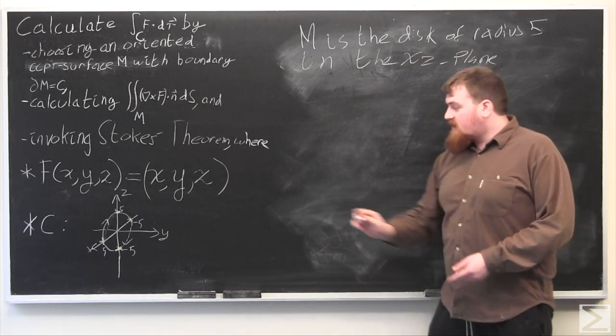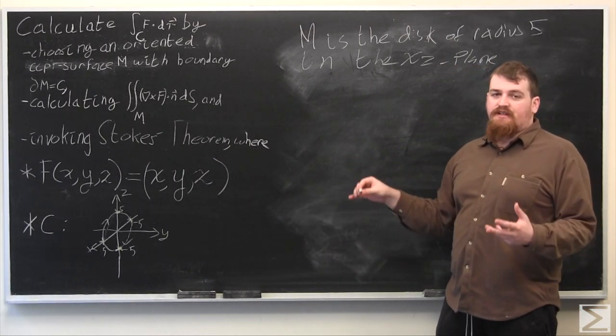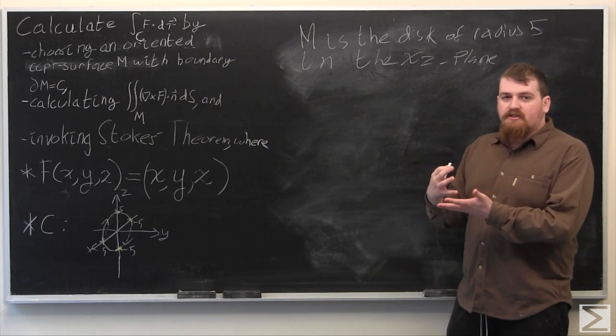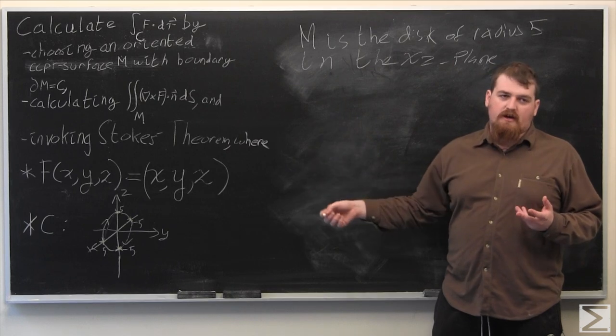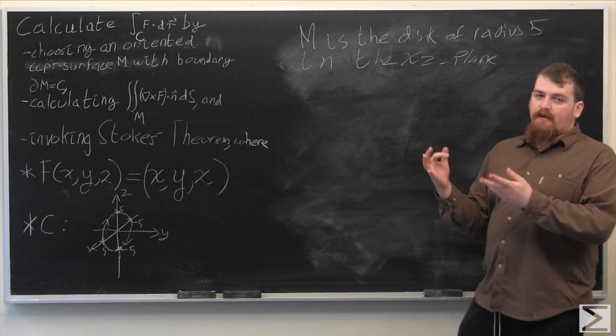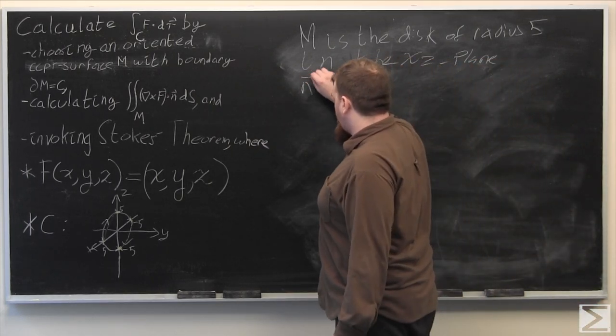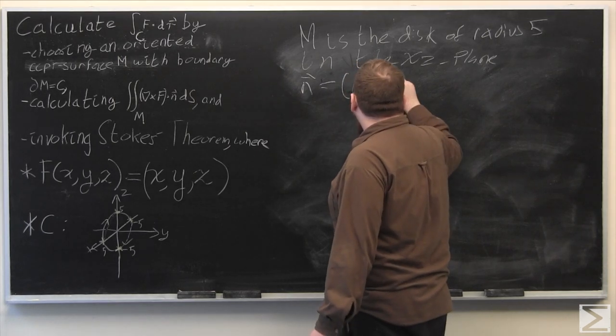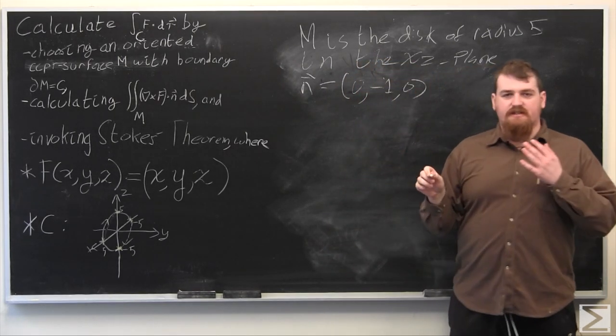And of course, since c in the x, z plane is oriented clockwise when you look at it from the positive y direction, proper orientation direction is anticlockwise, so the normal vector that coincides with the orientation of c for m is going to be the negative y direction unit normal vector, so our normal vector, n vector, is going to be 0, minus 1, 0, which is negative j.